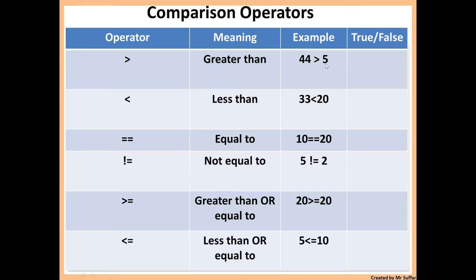Here, 44 is bigger than 5, so 44 is greater than 5 — that would be true. Less than is the opposite sign. For example, 33 is less than 20 — that's false because 33 is actually bigger than 20.